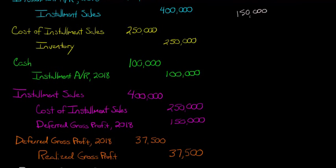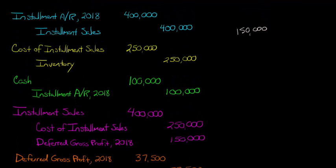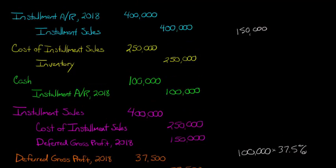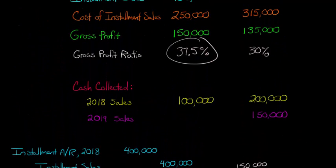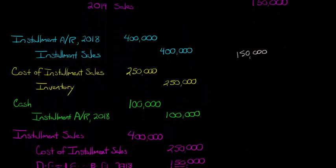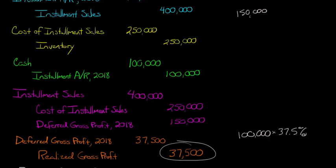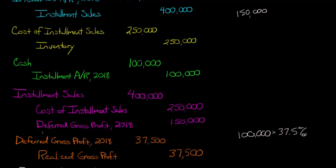How much profit do we recognize? We look at the cash that came in — $100,000 collected during the period. We multiply that by our gross profit ratio of 37.5%, which gives us $37,500. As cash is collected, we multiply it by our gross profit ratio. We debit deferred gross profit 2018 for $37,500 and credit realized gross profit for $37,500 — backing it out of the deferred account and recognizing it as realized profit.